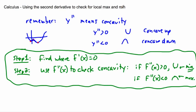You can use either method: the first method from the last video where you use a sign diagram with the first derivative, or replace step two by checking whether the second derivative is positive or negative — that also tells you if it's a max or a min.